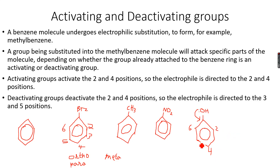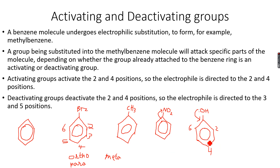It will only go to the two, four, or six positions — it will not go to the three and five positions. So it can attach here, here, or here, but it will not attach to three or five. When I have an activating group, it only goes to the ortho or para positions — the two, four, and six — and it will not go to the meta positions. You don't have to use those names in your exam; you can just say two, four, six.